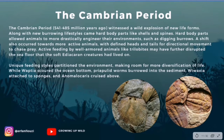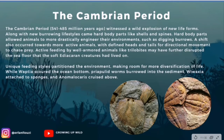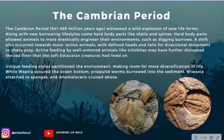The Cambrian period, 541 to 485 million years ago, witnessed a wild explosion of new life forms. Along with new burrowing lifestyles came hard-bodied parts like shells and spines. Hard-bodied parts also occurred in more active animals with defined heads and tails for directional movement to chase prey. Active feeding by well-armoured animals like trilobites may have further disrupted the seafloor that the soft Ediacaran creatures had lived on. Unique feeding styles partitioned the environment, while Waptia scoured the ocean bottom, priapulid worms burrowed into the sediment, Wiwaxia attached to sponges, and Anomalocaris cruised about.